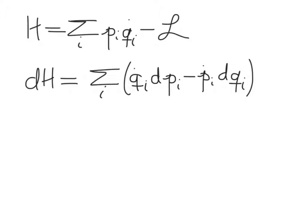Okay, so recall the Hamiltonian is defined in this way: the sum over i, p_i q_i dot minus the Lagrangian.